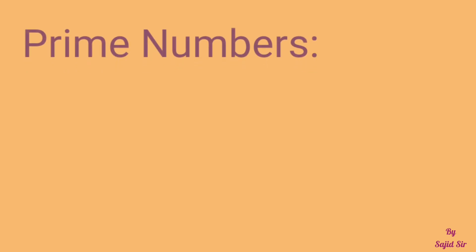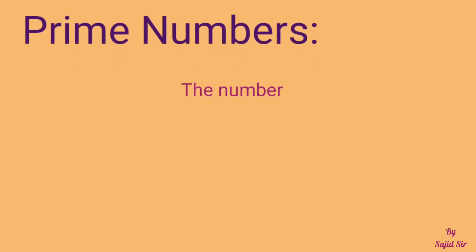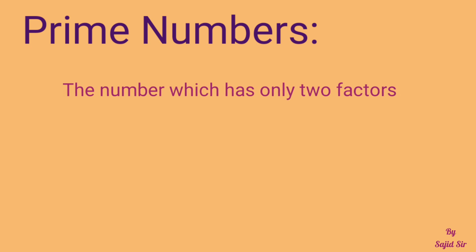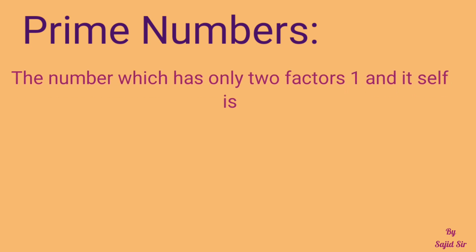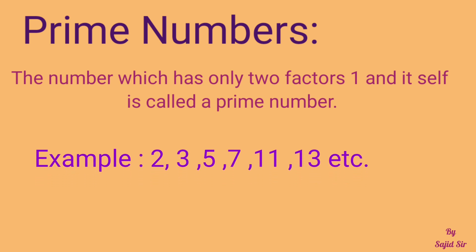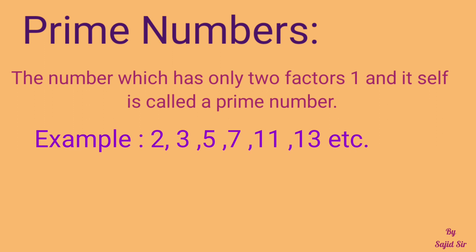Prime Numbers: The number which has only two factors, that is 1 and itself, is called a prime number. ऐसा number जिसके सिर्फ दो factor होते हैं — एक तो 1 और दूसरा वो खुद — ऐसे number को हम prime number कहते हैं। For example, 2, 3, 5, 7, 11, etc. are prime numbers.